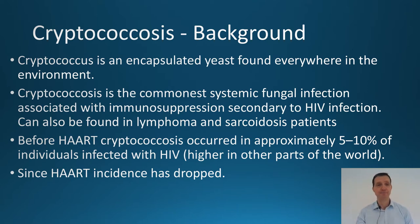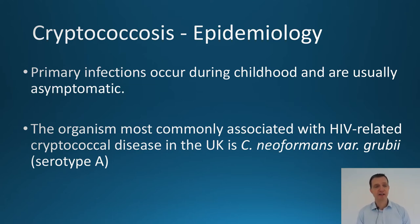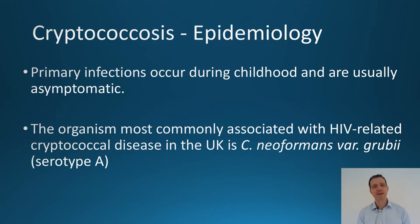So who gets Cryptococcus? Well, everyone has come into contact with it, and usually you get your first infection around about childhood. It's asymptomatic — children just brush it off and we don't really hear or see it again. There are also different types of Cryptococcus disease. Cryptococcus neoformans var. grubii is the most commonly associated Cryptococcus disease in the UK, and that's serotype A.